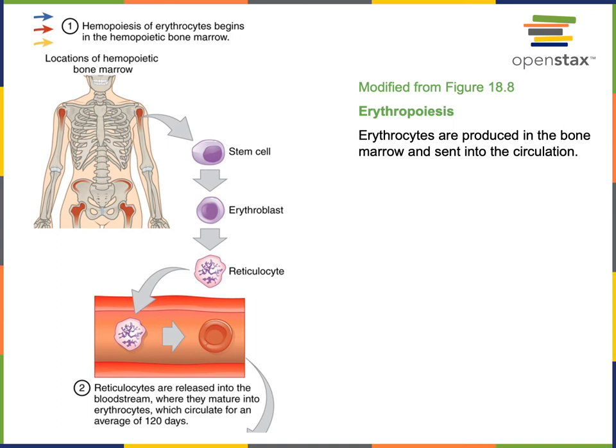Here we see the process of erythropoiesis, which is the formation of erythrocytes, where the hematopoietic stem cell differentiates into a more restricted lineage to produce the myeloid stem cell, that then becomes an erythroblast. The erythroblast then starts producing large amounts of the protein hemoglobin, filling the cytoplasm.